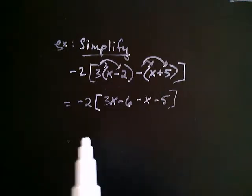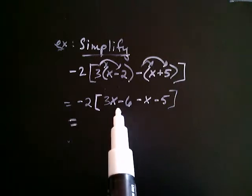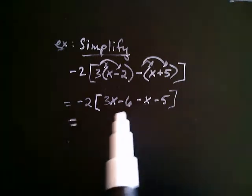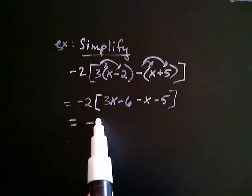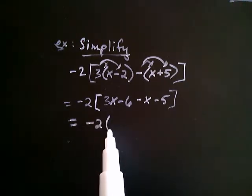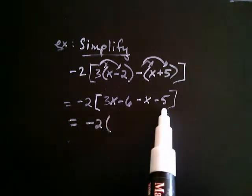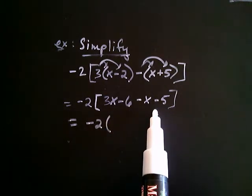Okay, so now we're going to combine like terms inside the brackets. So, 3x minus x is 2x. Now, this negative 2 is still on the outside there, that hasn't changed. So, I can change the bracket to parentheses because I no longer have parentheses inside the brackets. And that's how it goes.